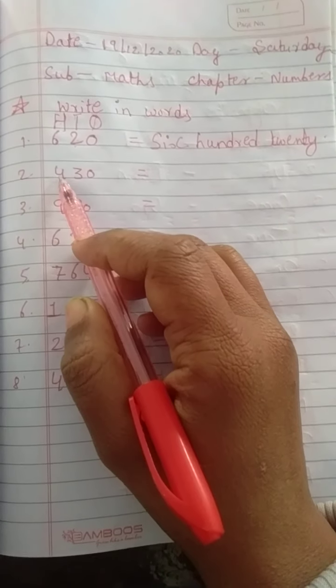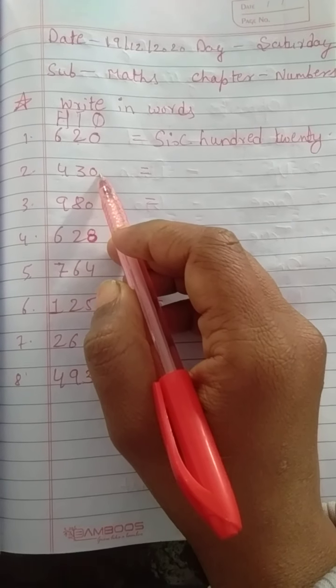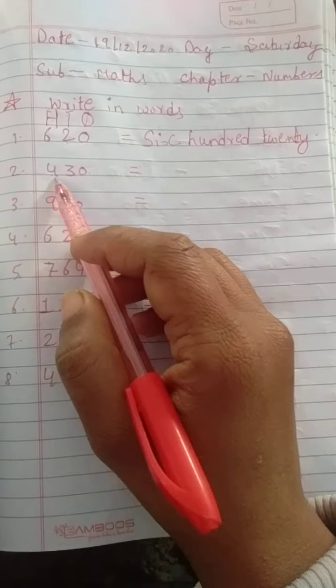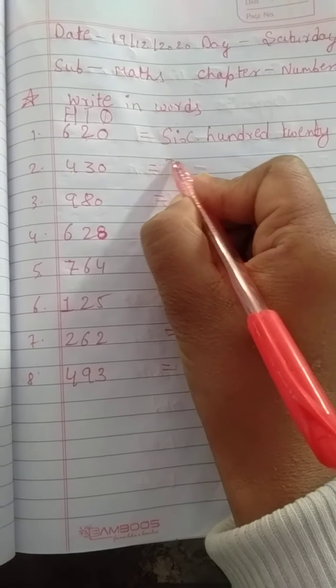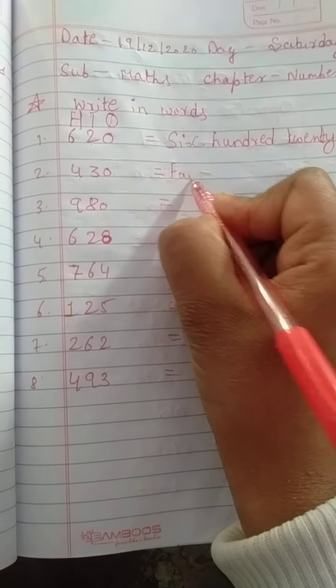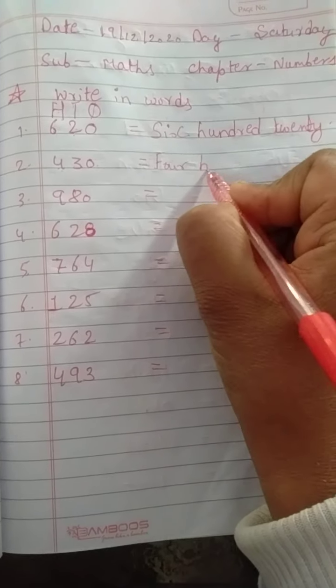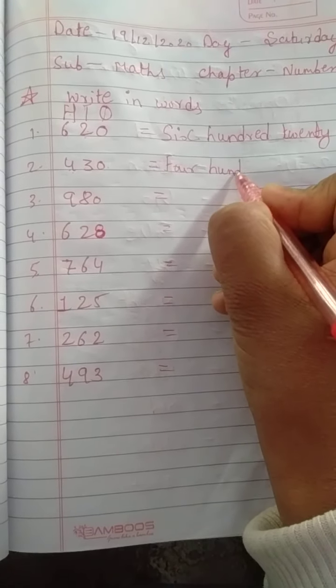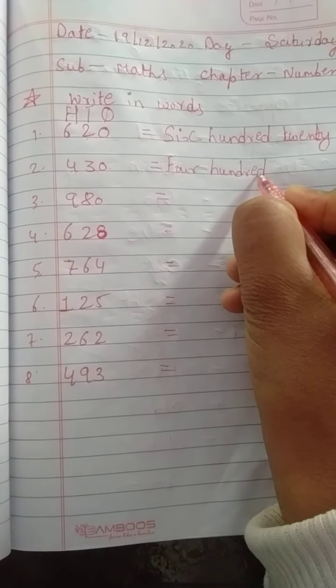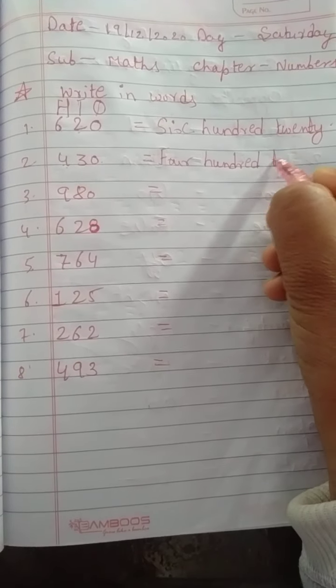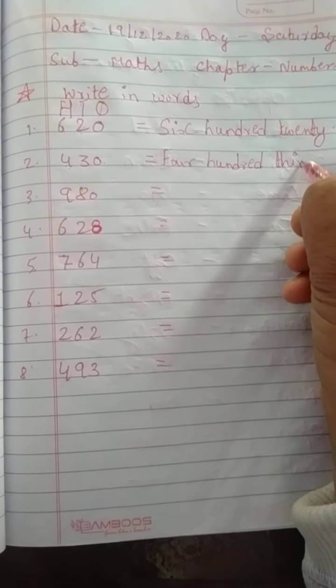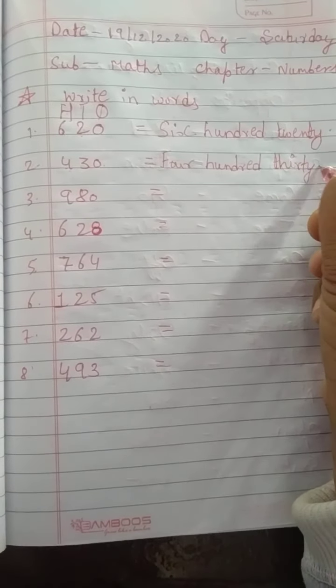Next topic is 4 3 0. So how are you going to learn? 430. T-H-I-R-T-Y. 30.